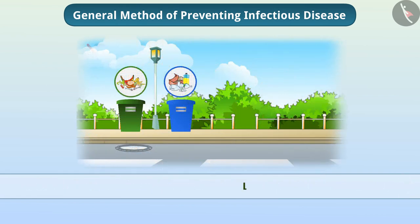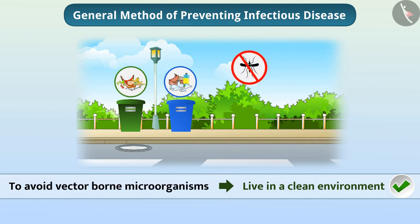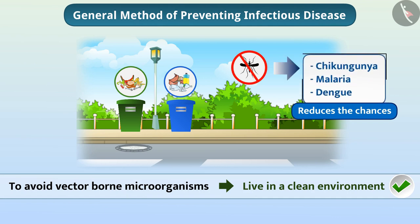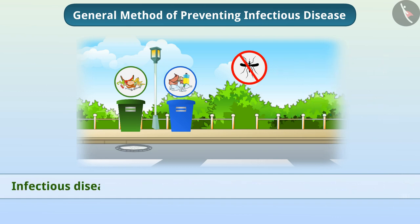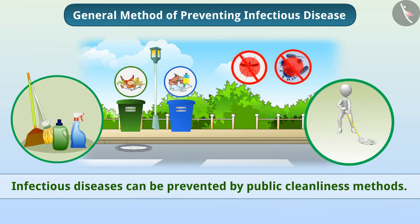One must live in a clean environment to avoid vector-borne microorganisms. For example, mosquitoes do not breed in a clean environment. This reduces the chances of getting diseases which are spread by mosquitoes. Therefore, hygiene is essential to prevent infectious diseases, and infectious diseases can be prevented by public cleanliness methods. This reduces the infectious cause of diseases.